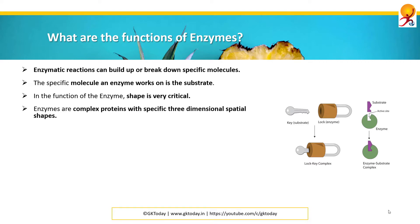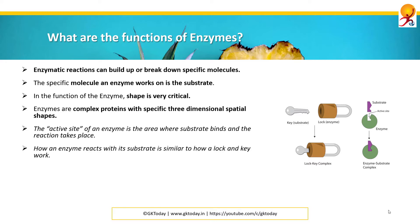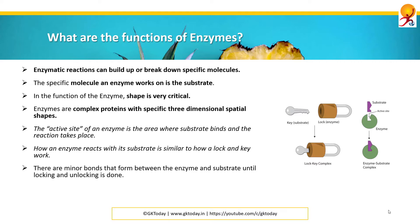Enzymes are complex proteins with specific three-dimensional spatial shapes. The active site of an enzyme is the area where the substrate binds and the reaction takes place. How an enzyme reacts with its substrate is similar to how a lock and key work. There are minor bonds that form between the enzyme and the substrate until locking and unlocking is done.